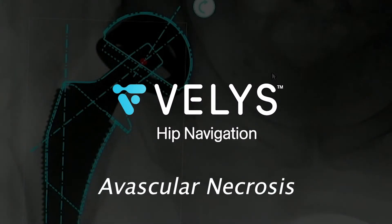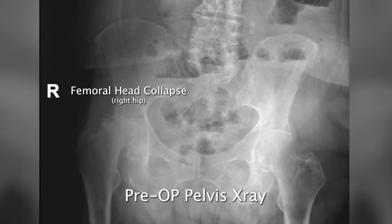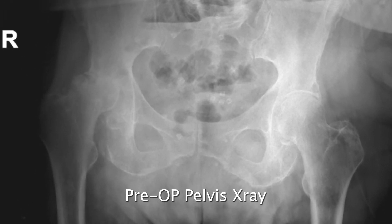Velos hip navigation in a patient with avascular necrosis. This case starts with first looking at the AP pelvis to assess for leg length inequality. You can see that this patient's leg is significantly shortened radiographically. The patient is at high risk for dislocation with this diagnosis post-operatively. With Velos hip navigation, we can achieve stability with an anatomic restoration of the patient's anatomy.